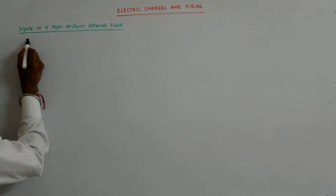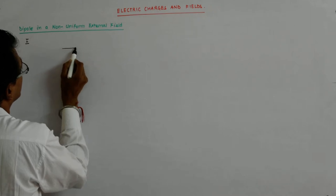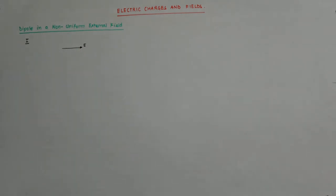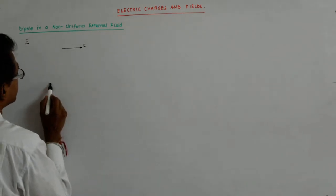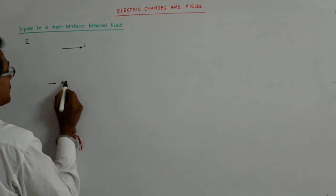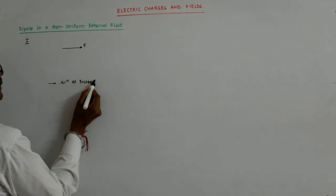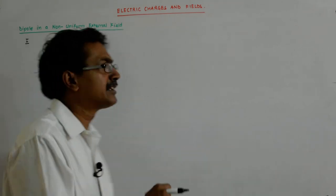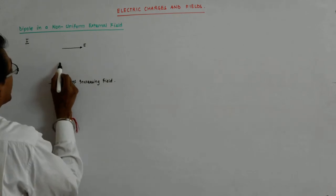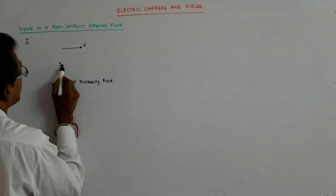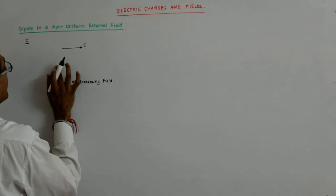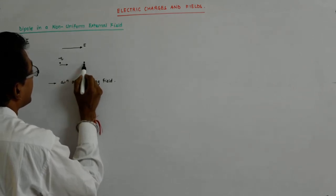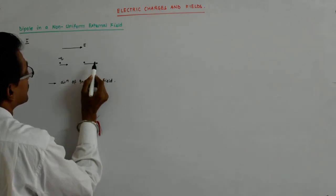In the first case, the field is directed from left to right, but it increases in the same direction. So here the field is in this direction, and in this direction the field direction is the same but the magnitude has changed — this is the direction of increasing field.